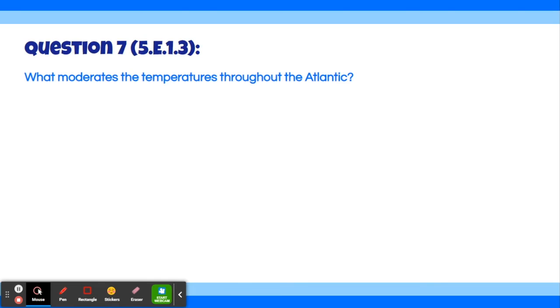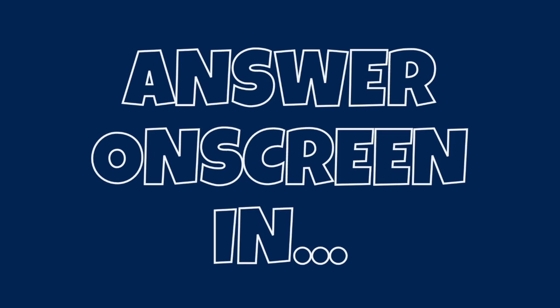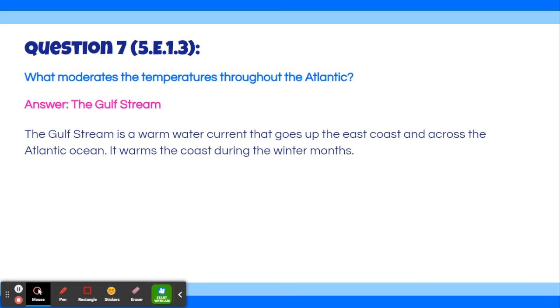Okay, moving on to question number seven. What moderates the temperatures throughout the Atlantic? The answer is the Gulf Stream. The Gulf Stream is a warm water current that goes up the east coast and across the Atlantic Ocean. It warms the coast during the winter months.